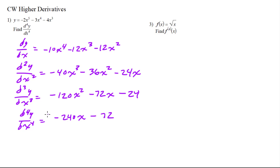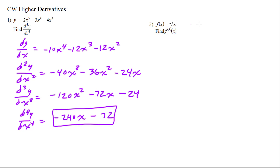That would be our final answer. For number three, we have it in radical notation. We can't do too much with it in radical notation, so we are going to rewrite this as x to the one-half. This notation means we want the fourth derivative again.